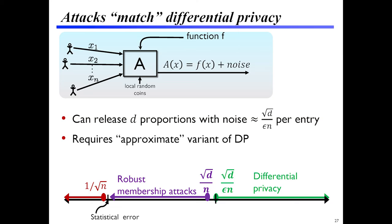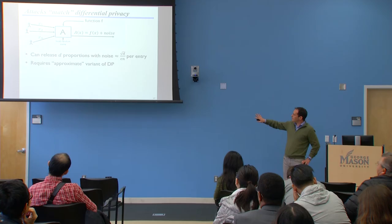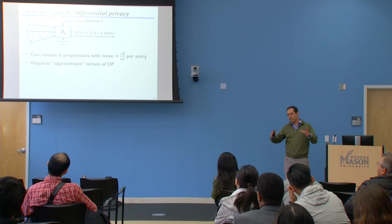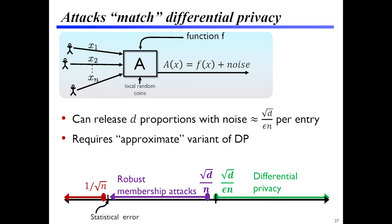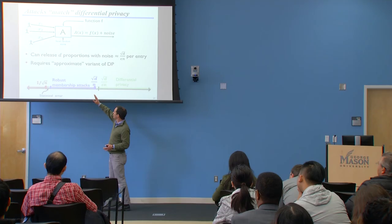If I want to release d proportions — a higher dimensional thing — I can do that with noise that scales roughly as the square root of the number of proportions. Notably, the amount of noise we're adding goes up with the dimensionality of the problem, and it turns out that's inherent — we can't do better than that. That's because of the membership inference attacks I mentioned earlier — attacks that start working exactly when the amount of noise being added to the statistics is less than this amount.